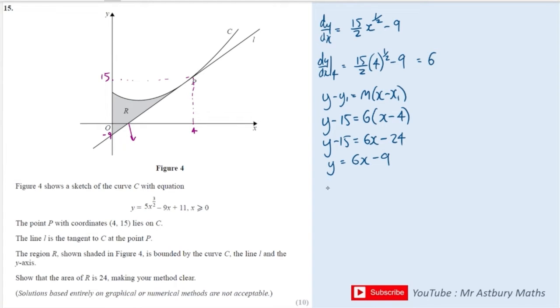So where it cuts the X axis, the Y coordinate is 0. So I'm going to set Y equal to 0 and that means that 0 equals 6X minus 9 at that point, so 6X equals 9, so X equals 1.5. Okay great, so I can put that on my sketch as well. We've got 1.5 over there. Right, now I can start looking at areas now that I've got all of my key points on the curve.